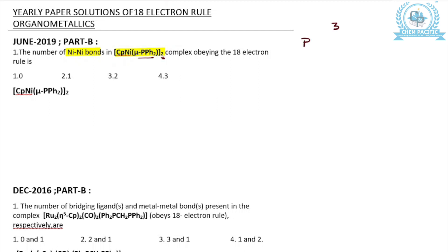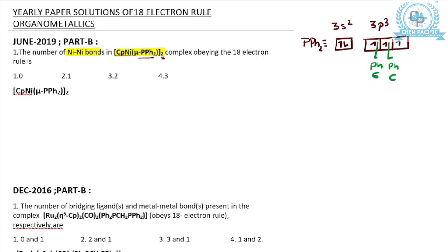Phosphorus is having electronic configuration 3s² 3p³. When it forms PPh₂, it results in the formation of a sigma bond with 2 Ph groups. It is very clearly visible that when it is μ-PPh₂, one metal forms a coordinate covalent bond and the other forms a normal covalent bond. So this is a 3-electron donor.